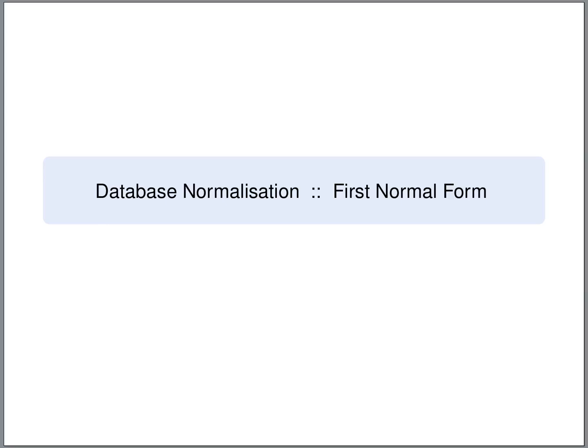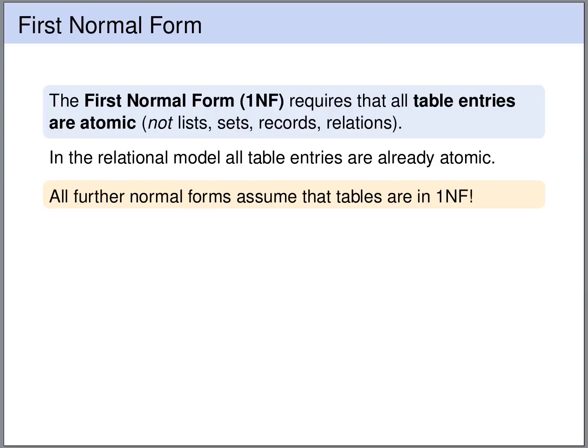All normal forms that we will be considering have as base assumption that the relations are at least in first normal form. The first normal form requires that all table entries — the values in the table cells — are atomic. So they are not lists, not sets, not records, not relations, and so on. In the relational model this is a given; the entries in the table cells are always atomic.